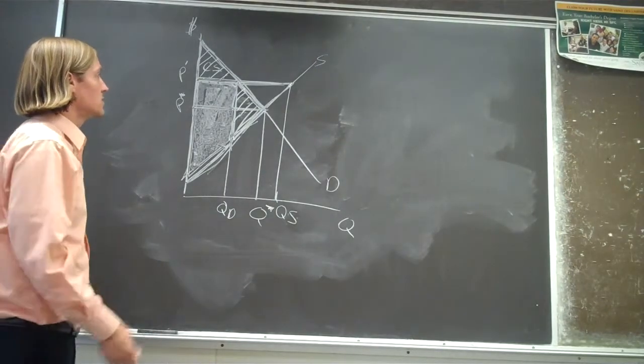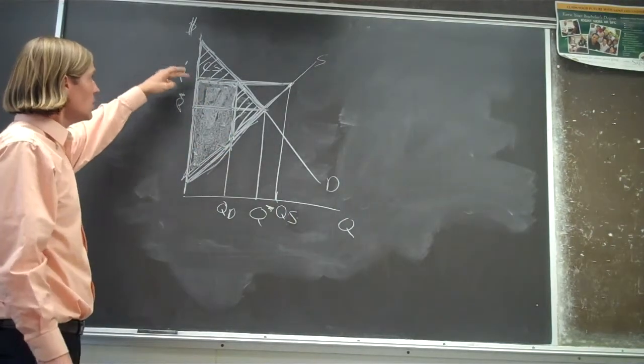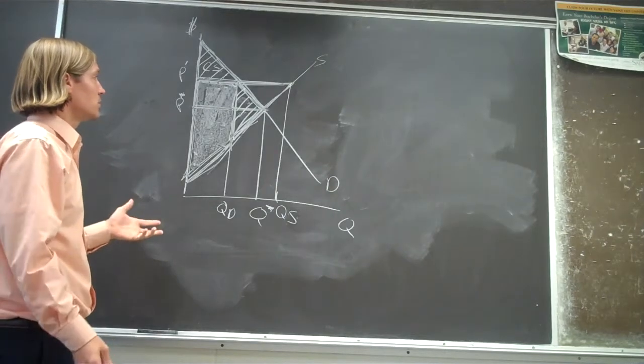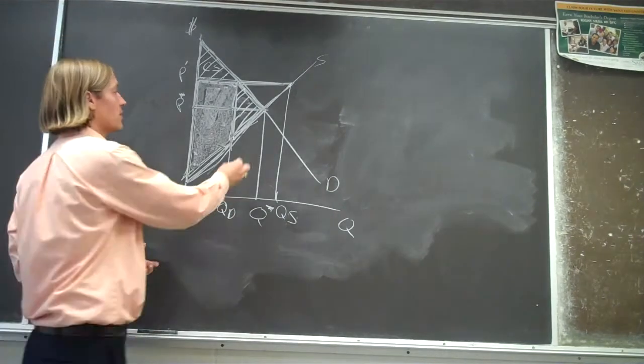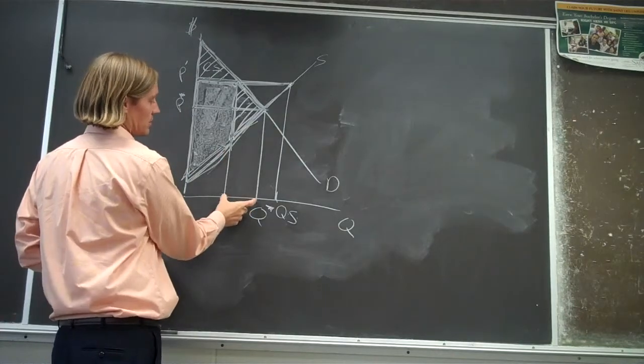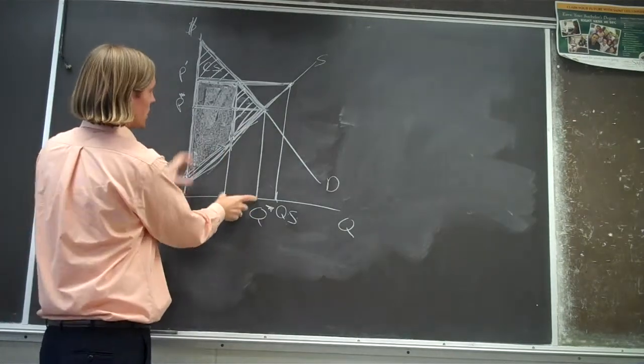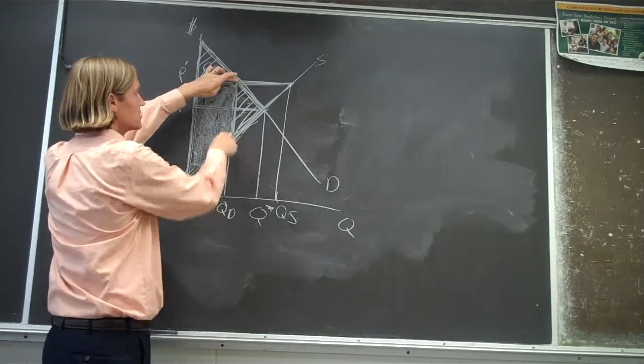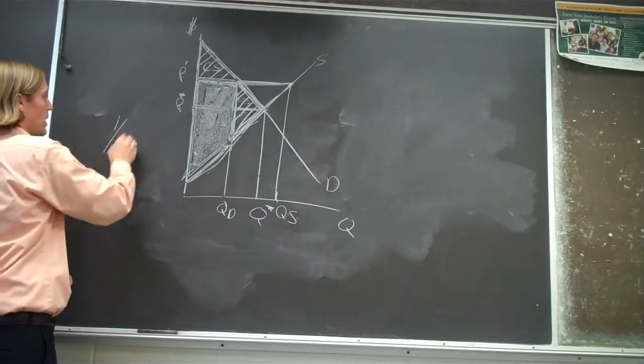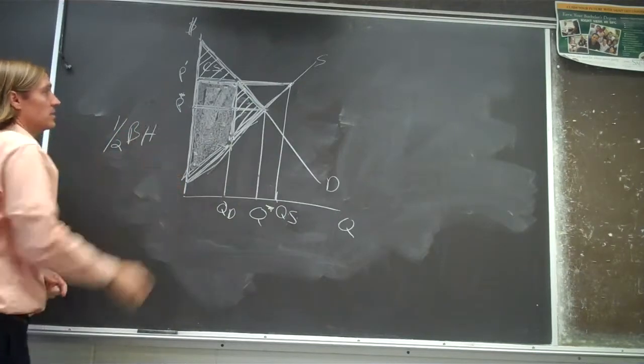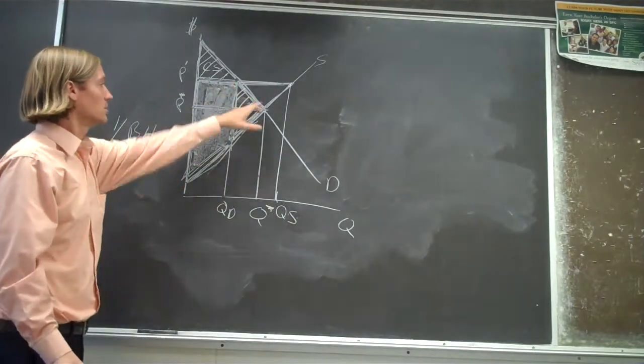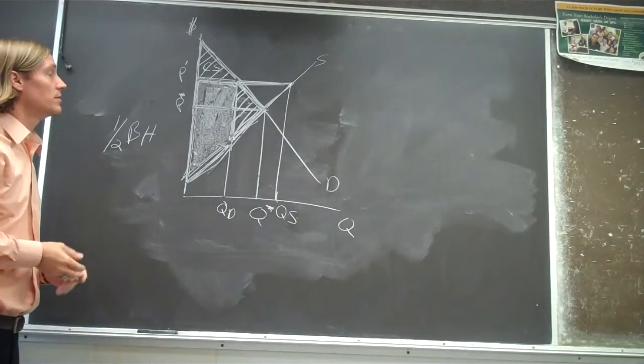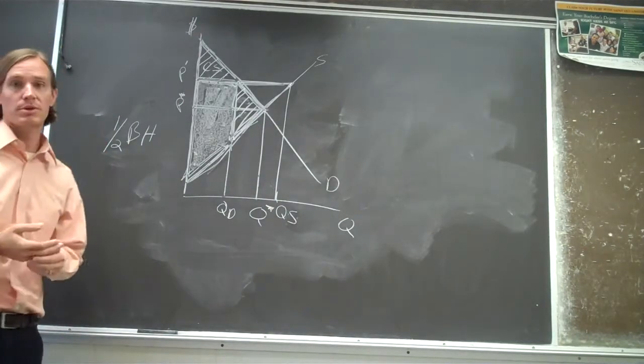So what's the value of that? Well, if you want the value of that, you figure out the area. So you figure out the height of that triangle, you figure out the base of that triangle. And you divide it by half. So one half base times height should give you the total loss of welfare to this system because of the price floor that was put in place.